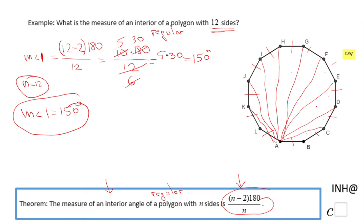We're going to have 10 triangles, right? We can count them: 1, 2, 3, 4, 5, 6, 7, 8, 9, 10. 10 times 180 is 1,800 divided by 12. We're going to end up with 150. This is another way to do the problem.